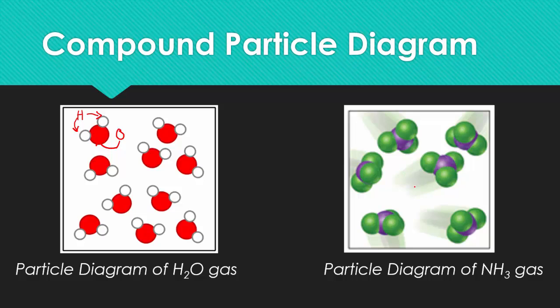On the right, we have a particle diagram for NH3 gas. The N, because there's only one of them, is represented by the purple sphere, while the green spheres represent your hydrogens.